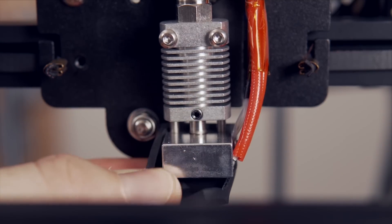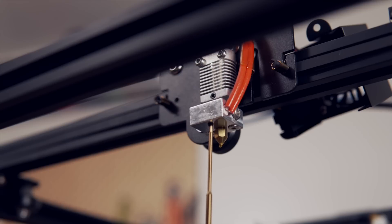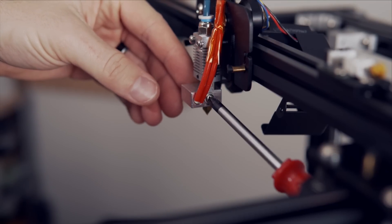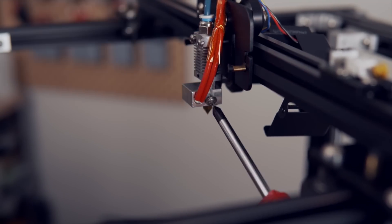Next, remove the silicone sock and using a 1.5mm Allen wrench, you'll need to loosen the set screw on the bottom side of the heater block. This is what's holding our heater cartridge in place. Then, using a Phillips screwdriver, we need to remove the Phillips screw that is holding our thermistor inside of the heater block.